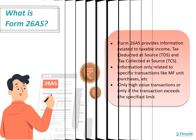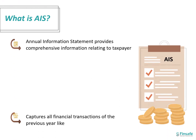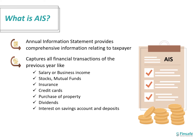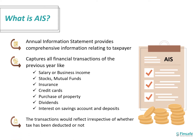The Annual Information Statement, on the other hand, provides comprehensive information relating to the taxpayer and captures all financial transactions — for example, your incomes, investments, insurance, credit card payments, property purchase, dividend, rent receipt, remittances, cash deposits, interest and savings account, and taxes paid. The transactions would reflect irrespective of whether the tax has been paid or not.